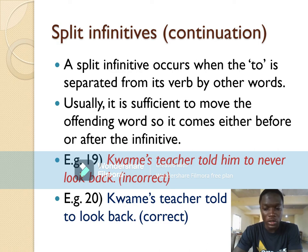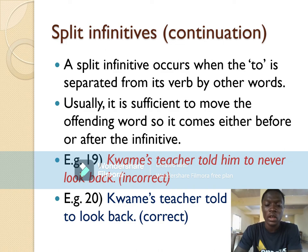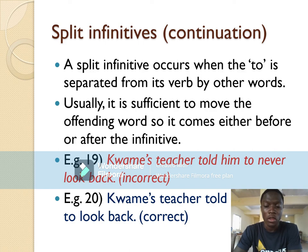Example: 'Kwami's teacher told him to never look back.' Here, 'never' is separating 'to' and the verb 'look.' To correct it, move 'never' before the infinitive: 'Kwami's teacher told him never to look back.'